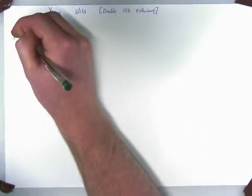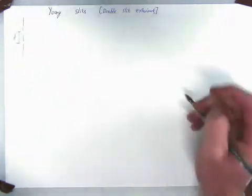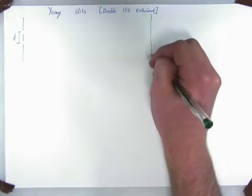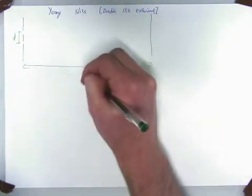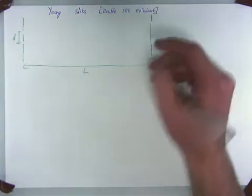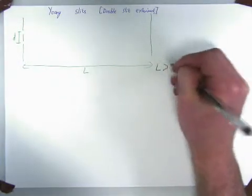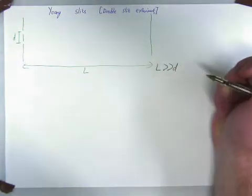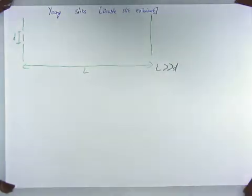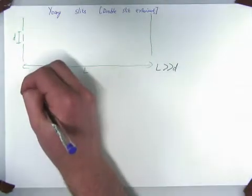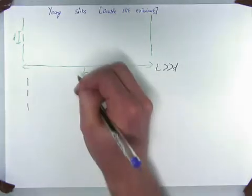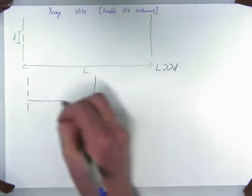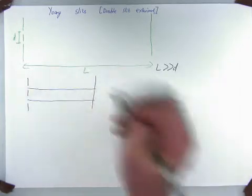From the center of the two slits we have our distance d away. We have our screen which is a distance L away. Now, the distance L is a lot larger than the distance d. That means we draw our aperture again. Now, our screen is over here. Draw our two lines.